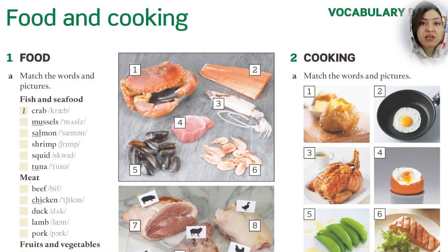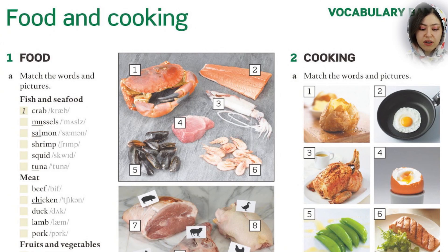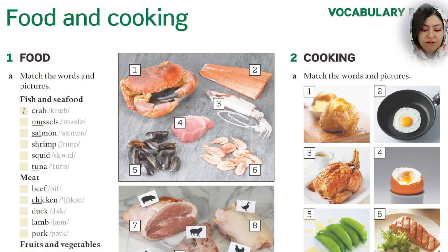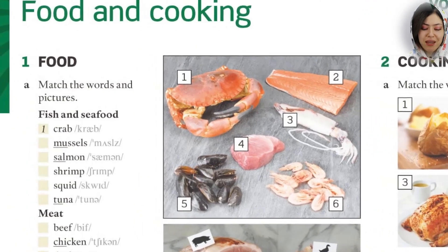Now let's turn to part B of the vocabulary section. Part A was a small quiz. Right now we are on part B, which is going to teach us some good and new vocabulary. We turn to page 152 — it's about food and cooking. Here there are some food groups categorized, and I will read the names of these foods for you. You are going to guess which vocabulary belongs to which number. Match the words and pictures.